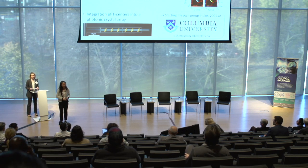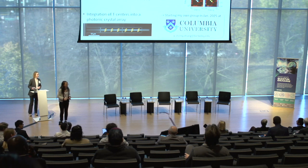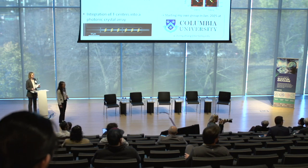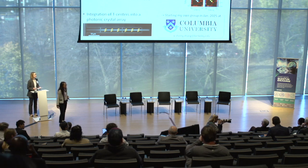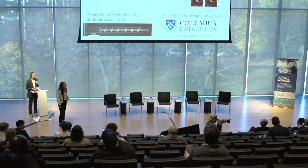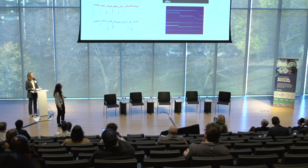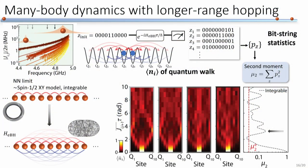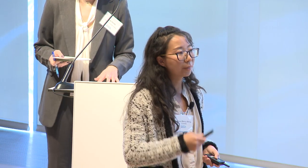Thanks for the nice talk. Can you say what violations of the hardcore boson model look like in your system and how likely they are to actually occur? So in our system, the on-site interaction term — the anharmonicity U — is larger than 200 MHz. That is at least one order of magnitude larger than any other terms, such as hopping or disorder. So we don't expect to see much of the second excitation, like doublons, and the effect would probably be less than 1% error, possibly causing some small difference between numerical simulations and experimental results.